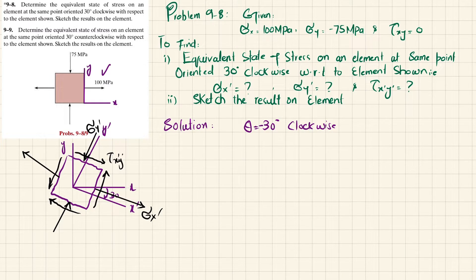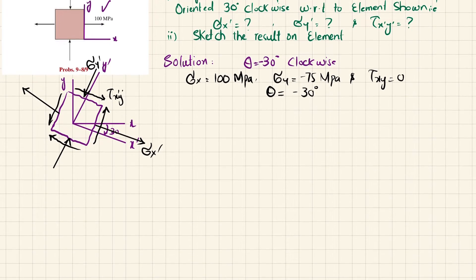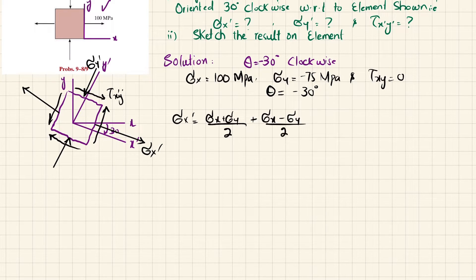The given data: sigma x equals 100 MPa, sigma y equals minus 75 MPa, tau x y equals 0, and theta equals minus 30 degrees. The transformation equation for sigma x dash is: sigma x dash equals (sigma x plus sigma y) divided by 2, plus (sigma x minus sigma y) divided by 2 times cos(2 theta), plus tau x y times sin(2 theta).